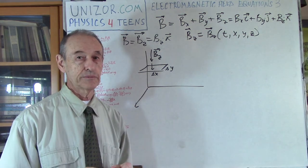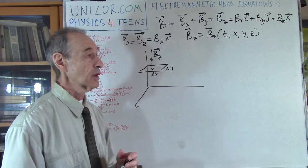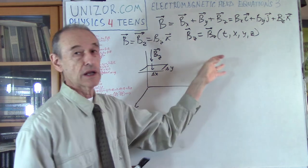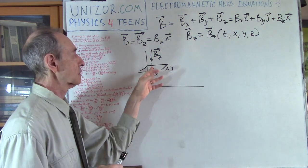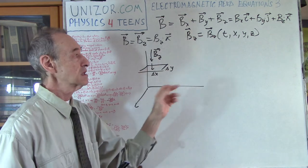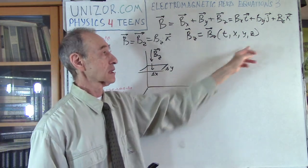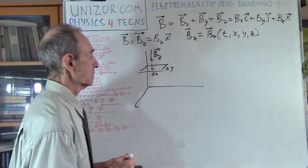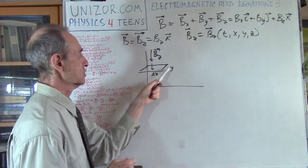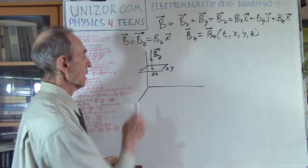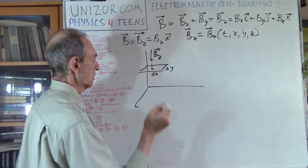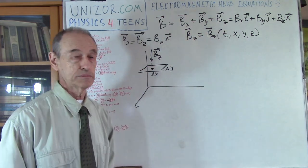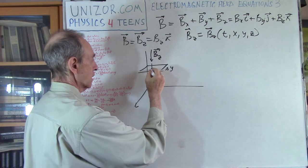There will be electric current generated in this wire rectangle. I will consider this wire rectangle to be very, very small — its dimensions would be delta X by delta Y. I want to be dependent only on the value of vector Bz at a particular point X, Y, Z.